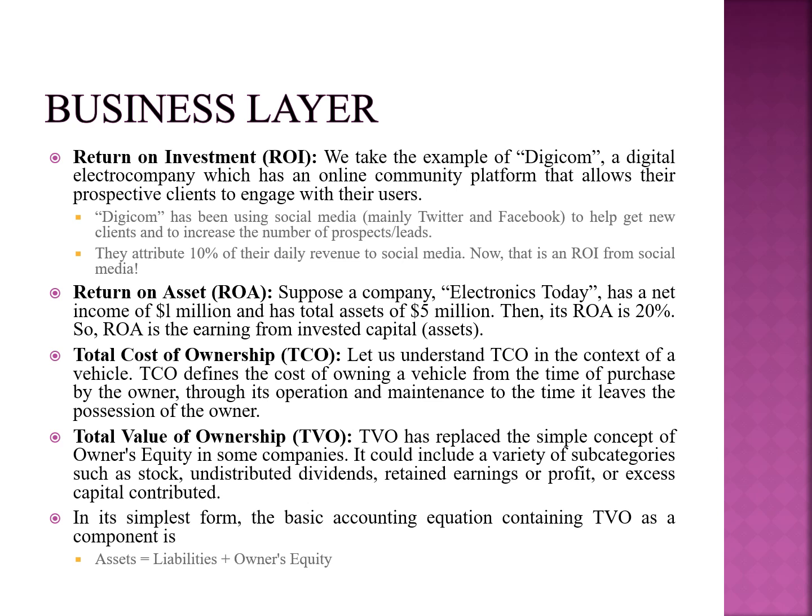Total Cost of Ownership (TCO) involves the cost of owning a vehicle from the purchase date through the duration of operation and maintenance until the vehicle leaves the owner. Total Value of Ownership (TVO) is used to replace the concept of ownership security in some companies. It can include subcategories such as the cost of investment in stock, return on earnings or profit, and excess capital contributed — all calculated by considering liabilities and ownership activity.